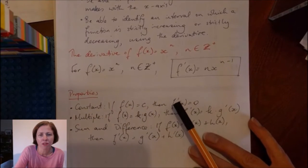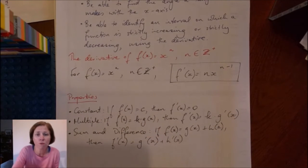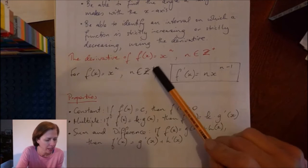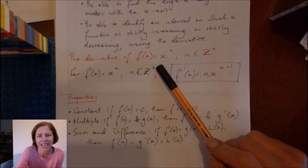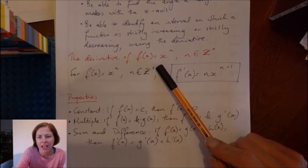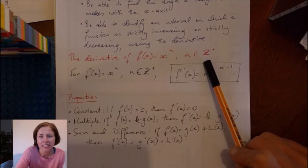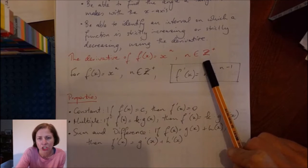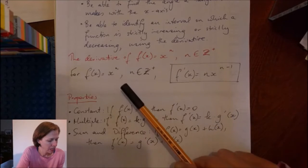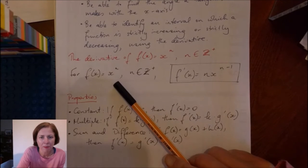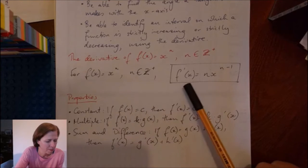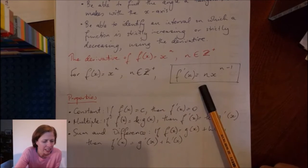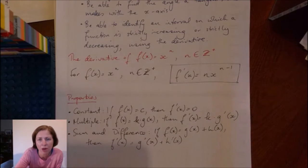And we start with the rule for finding the derivative of a function. If the function is in the form f(x) = x^n, and n in this case is an integer, then my derivative f'(x) is nx^(n-1).